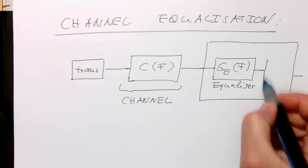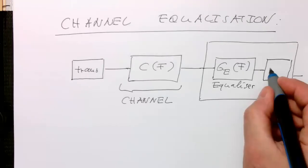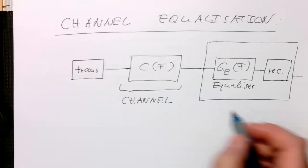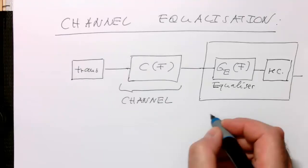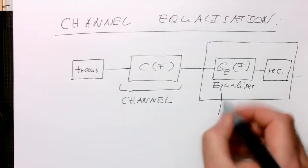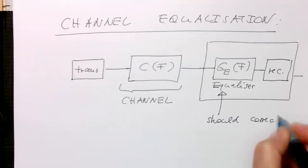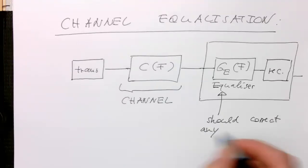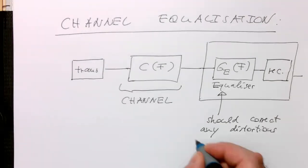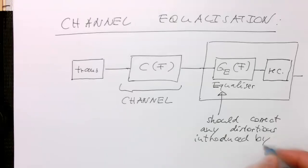The equalizer should correct all the changes the channel has introduced to our transmitted signal, so that our demodulator or receiver gets exactly the same signal as what was transmitted in the ideal case. The equalizer should just compensate for any changes the channel has introduced and correct any distortions introduced by C(f).